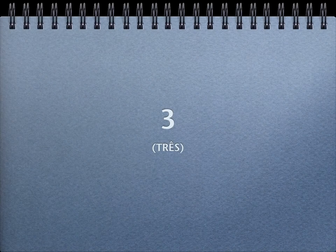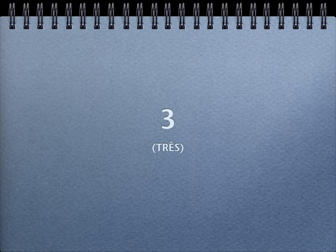But don't worry, because we only do this with number 1 and number 2. For the following numbers, we only have one possible form. For number 3, we have 'três.' Because there is an S at the end, we get a very soft SH sound at the end of the word. So every time you have the letter S at the end of a word, you make a soft SH sound, like in 'três.'